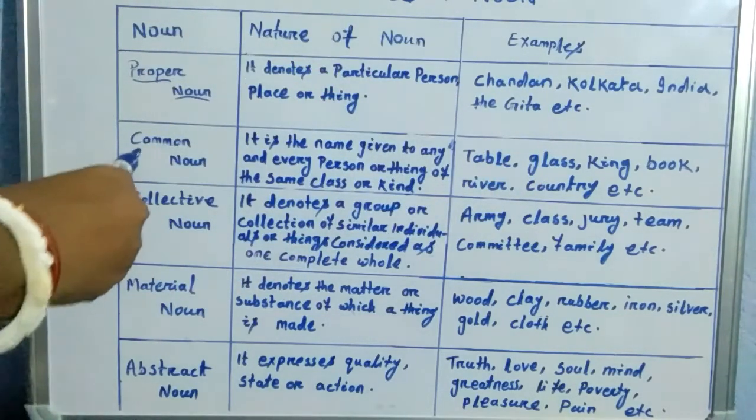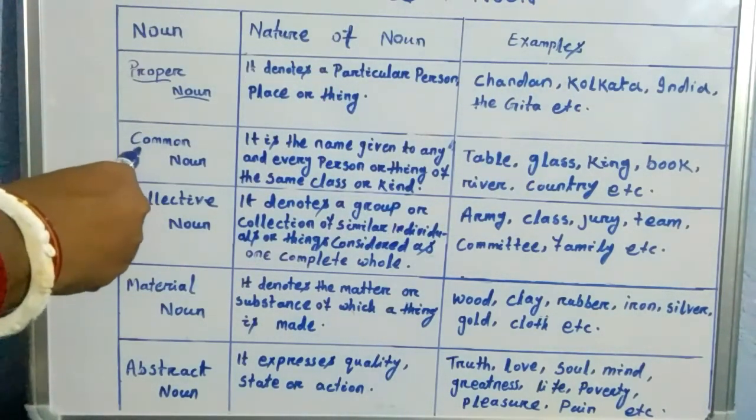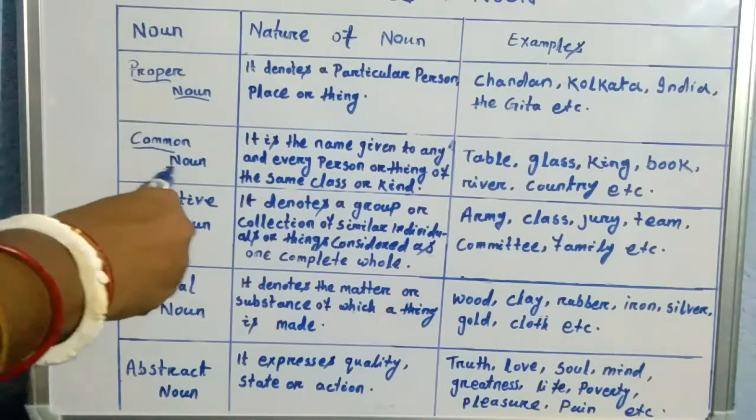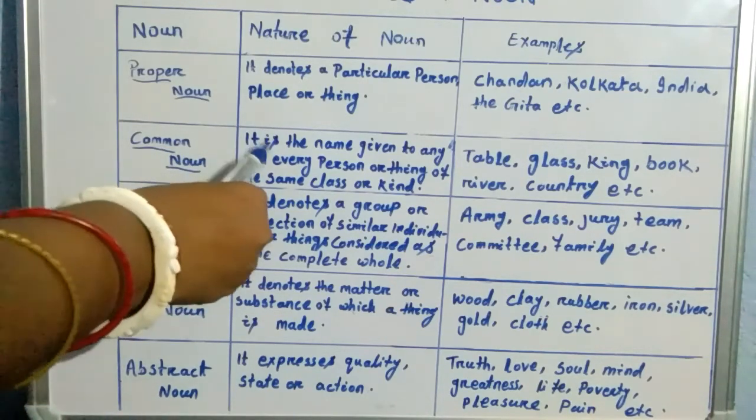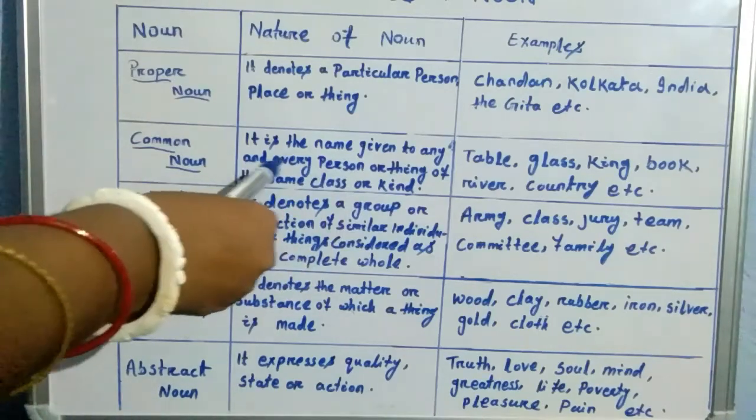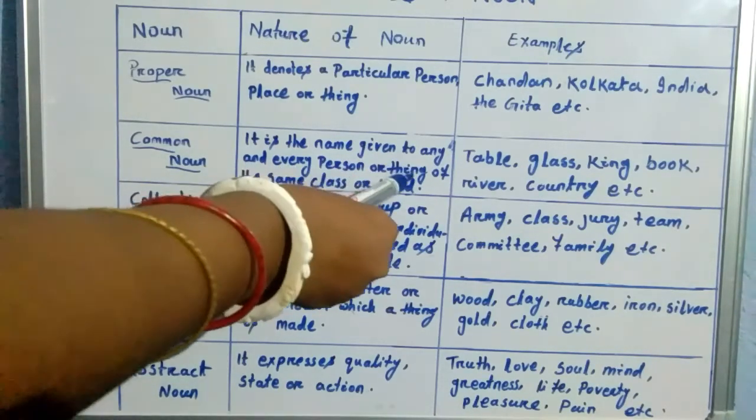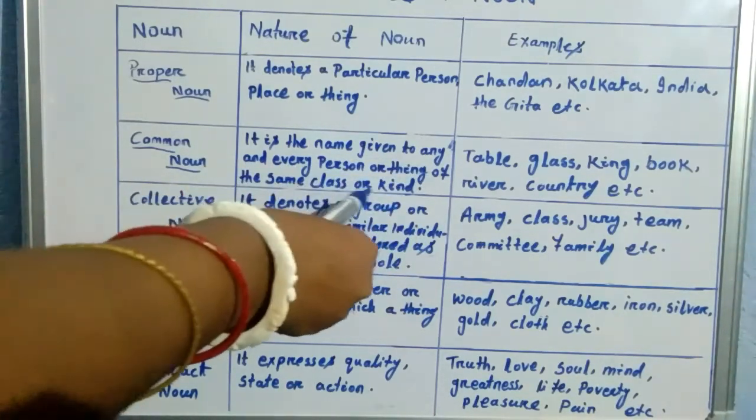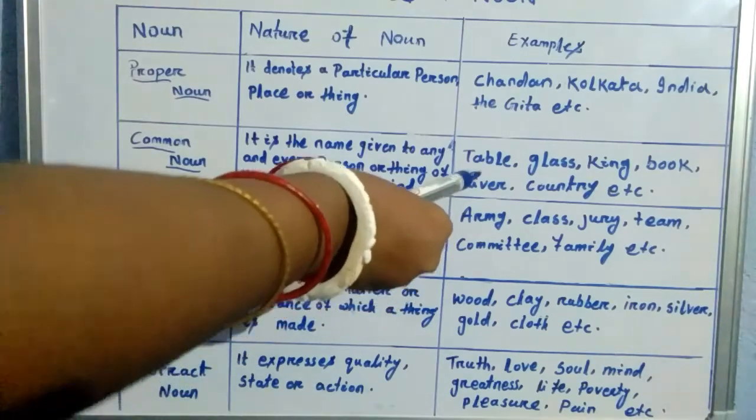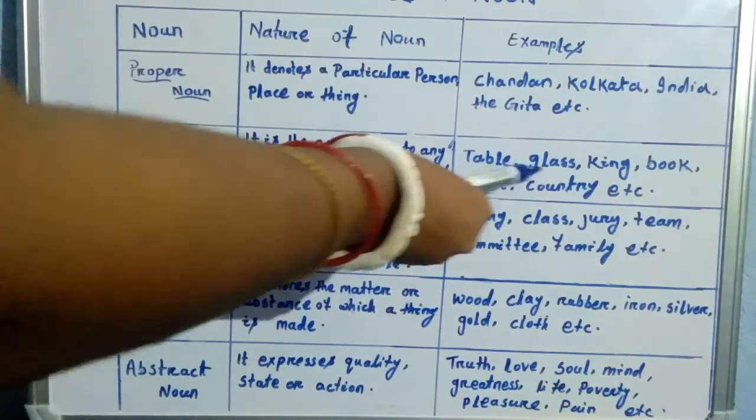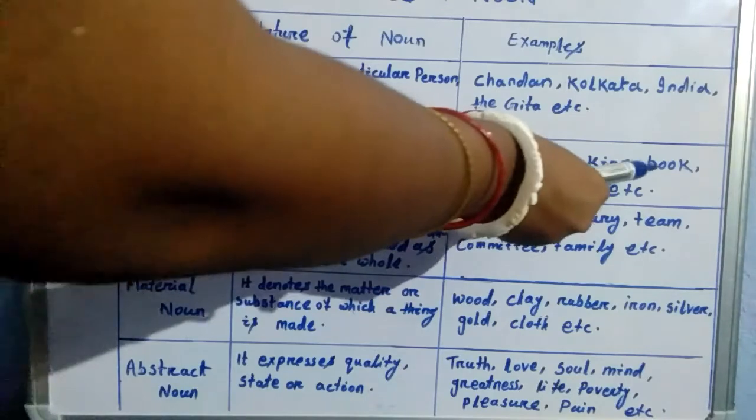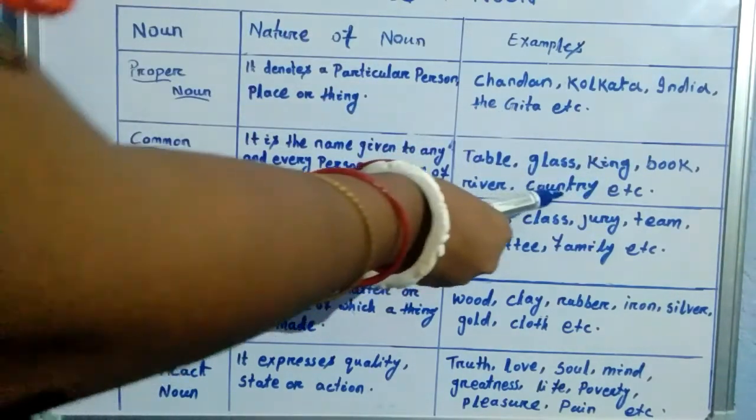Then come to the next kind of noun and that is common noun. It is the name given to any and every person or thing of the same class or kind. And the examples are Table, Glass, Kind, Book, River, Country, etc.